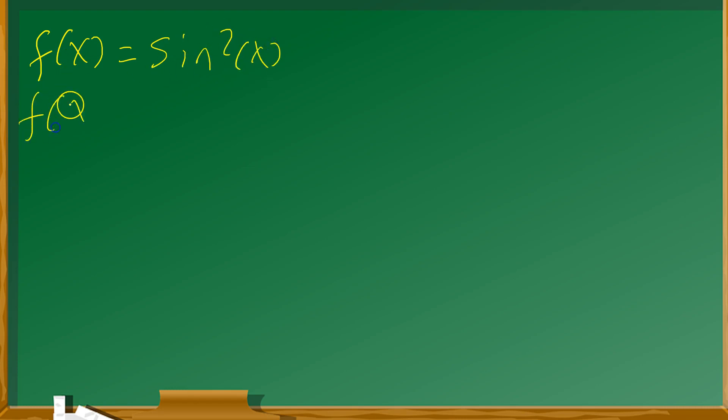The first stage is to rewrite this as f(x) = (sin(x))². You want to do it that way because then you can identify that this is a composition of two functions. Sine of x is the inner function, and the squaring, the exponent of two, is the outer function.